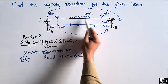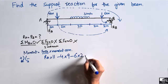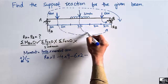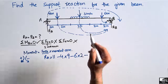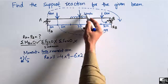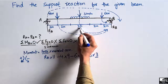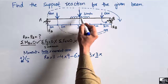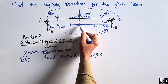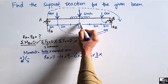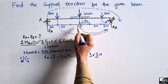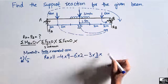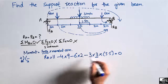We also have a uniformly distributed load of 3 kN/m over 3 meters. It acts downward, creating an anti-clockwise moment about B, so it is negative. Its resultant is 3 × 3 = 9 kN acting at the centroid of the distributed load, which is at the midpoint — 1.5 meters from its start. The moment arm from B is therefore 2 + 2 + 1.5 = 5.5 meters.